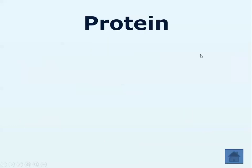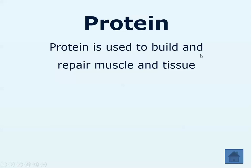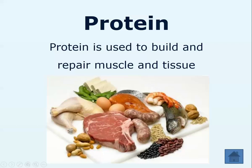So if we first look at proteins — protein is really important; it is used to build and repair muscle tissue. We find it in lots of different sources: chicken, pork chops, sausages, fish, nuts and pulses, and also tofu, which a vegetarian may use as a meat replacement. You can also have mycoprotein — lots of people eat that; you might know it better as something like Quorn mince.